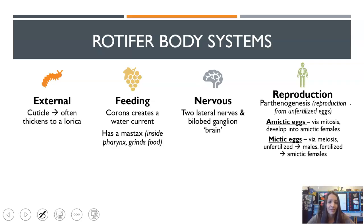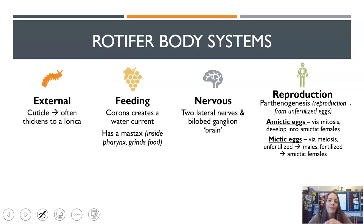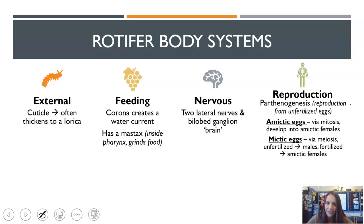In terms of rotifer body systems: externally they have something called a cuticle, which often thickens to form a hard outside shell called a lorica. Their corona creates a water current for feeding, and inside their mouth they have something called a mastax, which helps grind the food they eat. Their nervous system includes a simple form of a brain and nerve cords. And reproduction — parthenogenesis is that reproduction from unfertilized eggs, where an egg could never be fertilized and still produce a new rotifer.